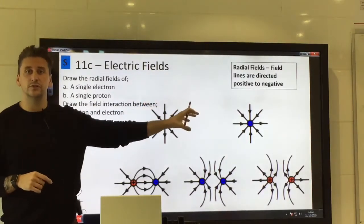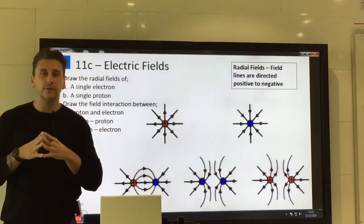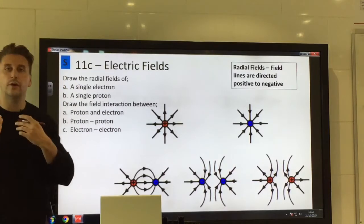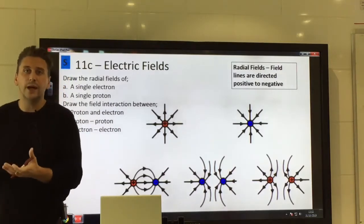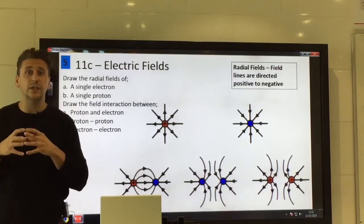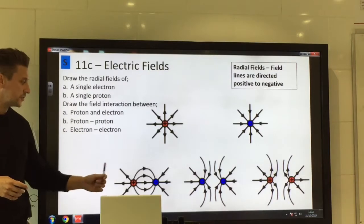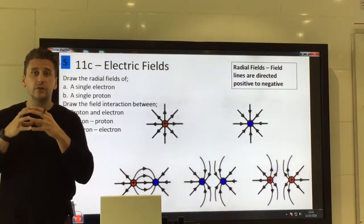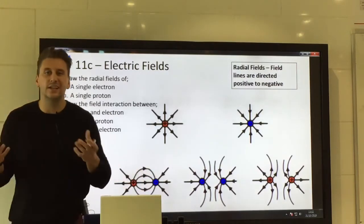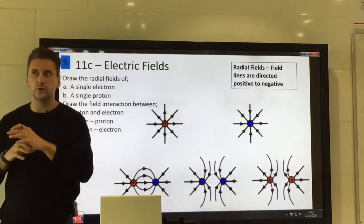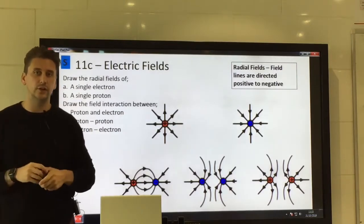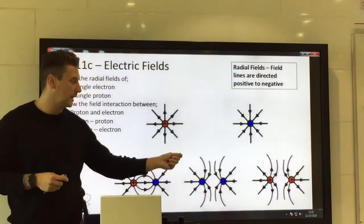These are single fields for single charges, but if asked what the interaction between those fields would look like — if you move one close to another — we know that opposite charges attract. For a proton and electron moved close enough, the fields combine. The field lines actually join together and come together between the two particles, directed positive to negative. On the outsides, the radial field is not much affected, but between them the field lines combine because they're attracting.